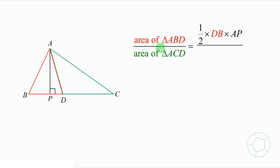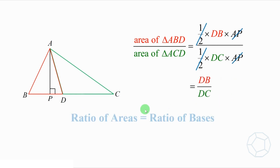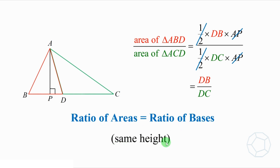So we can find the ratio of the areas of the two triangles. The area of triangle ABD is equal to 1/2 times the base DB times the height AP. Likewise, the area of the green triangle ACD is equal to 1/2 times the base DC times the height AP. Cancelling out 1/2 and AP, we have DB over DC. It means that the ratio of the areas is equal to the ratio of bases. This is true if the two triangles share the same height. Now we can use this idea to solve the area problem.